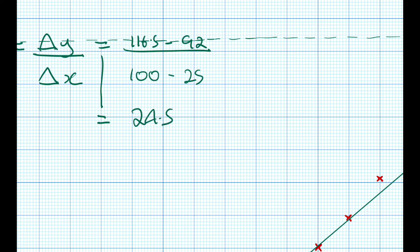In this case it's 116.5 minus 92. A simple calculation then gives us that the gradient is 0.326 kilopascals per degrees Celsius. What this actually means is that every time the temperature goes up by one degree Celsius, the pressure will go up by 0.326 kilopascals or 326 pascals if you like.